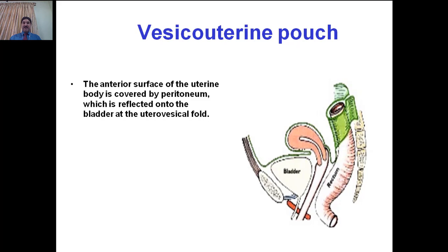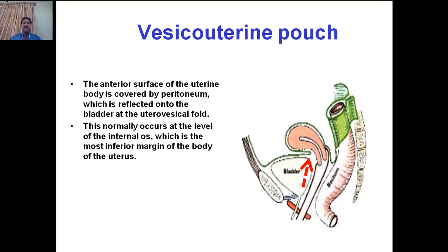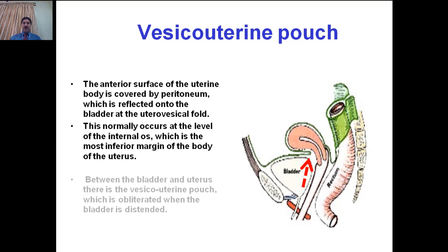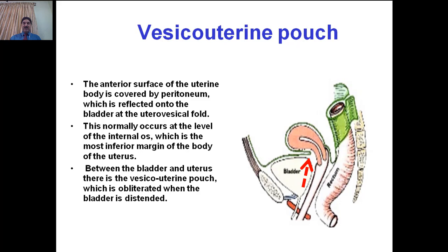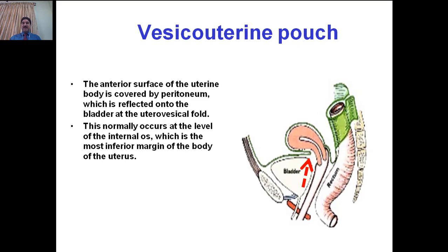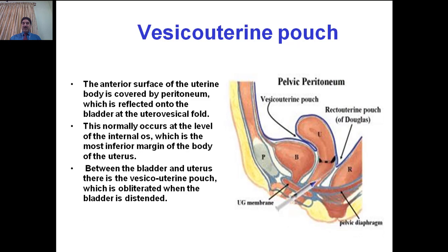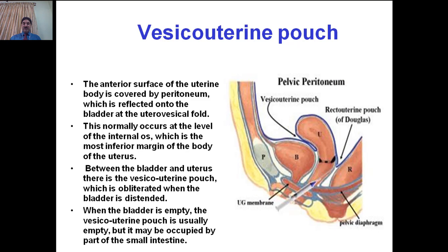The anterior surface of the uterine body is covered by peritoneum which is reflected onto the bladder at the uterovesical fold. This normally occurs at the level of the internal os, the most inferior margin of the body of the uterus. Between the bladder and uterus there is a vesicouterine pouch, which is obliterated when the bladder is distended. This pouch normally contains loops of gut, but when the bladder is distended the pouch may get obliterated. When the bladder is empty, the vesicouterine pouch is usually empty but may be occupied by parts of the small intestine.